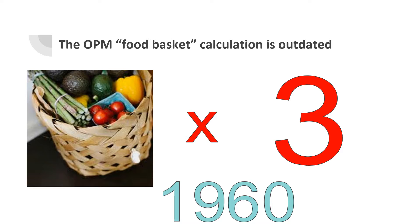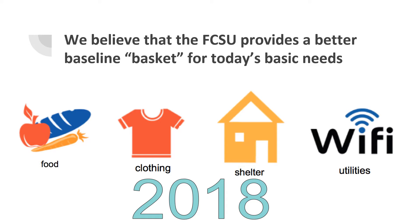To us, this measurement is outdated because the average household is spending less on food and more on other necessities and amenities in the 21st century. The SPM introduces the FCSU basket, which we feel is more accurate for modern society. This basket includes food, clothing, shelter, and utilities, and the poverty line is calculated as 1.2 times the spending level on FCSU of the 33rd percentile household in the United States.